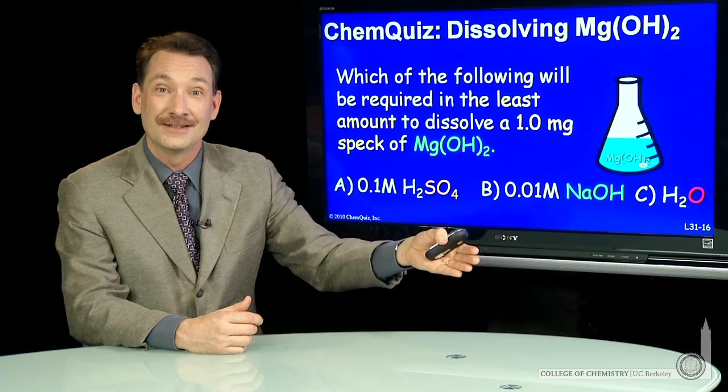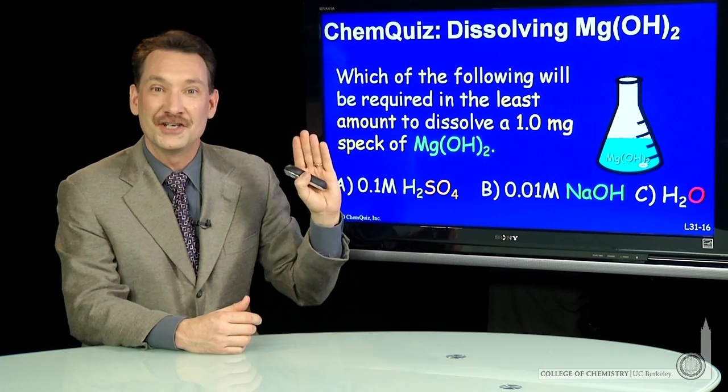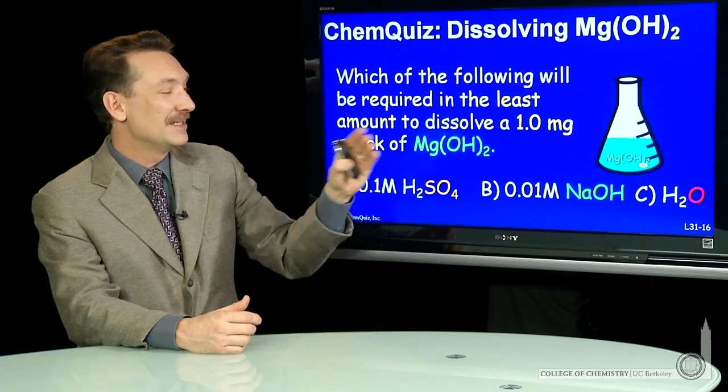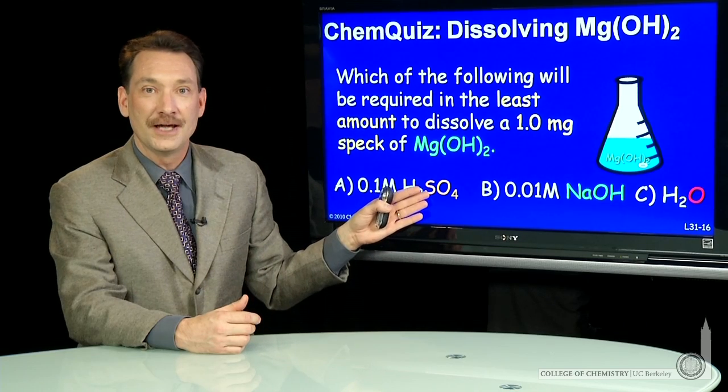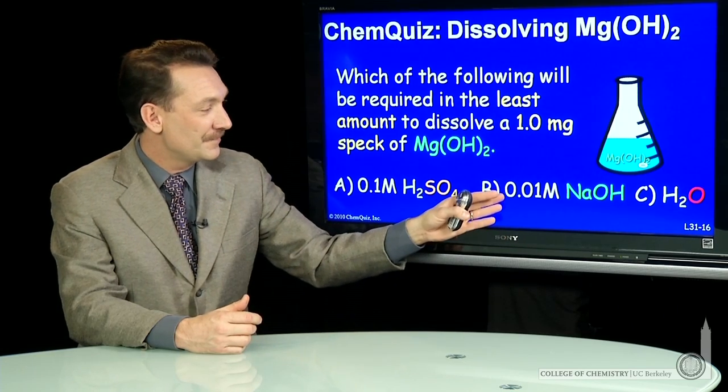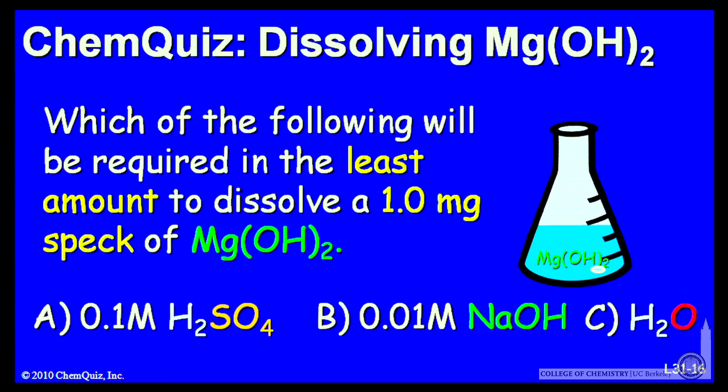Now, I'd like that to dissolve. What's the best strategy for dissolving that additional speck of magnesium hydroxide? Should I add 0.1 molar H₂SO₄ sulfuric acid, 0.01 molar sodium hydroxide, or plain water? Think about those three and make a selection.